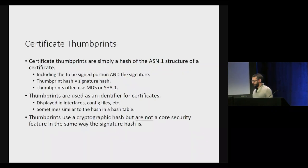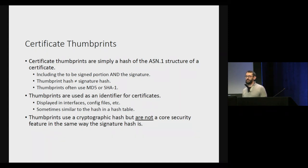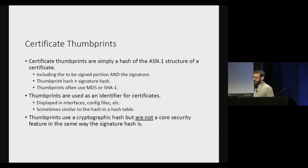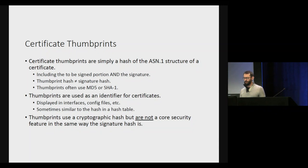Certificate thumbprints are simply a hash of the whole certificate ASN.1 structure, including the to-be-signed part as well as the signature. Importantly, the thumbprint hash is not necessarily the same as the signature hash, and thumbprints may still use MD5 or SHA-1. They are essentially identifiers for certificates — a more concise identifier — displayed in interfaces and config files, used to refer to certificates in code. Thumbprints are cryptographic hashes but are not really considered a core security feature in the same way the signature hash is. The TLDR: thumbprints are aliases for certificates.